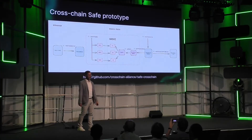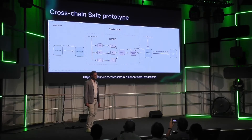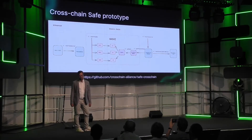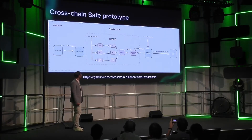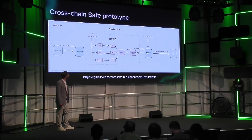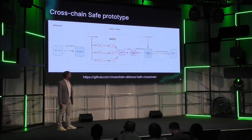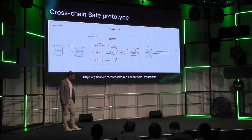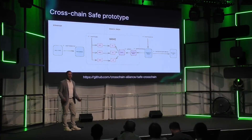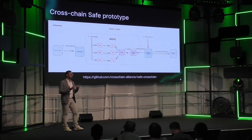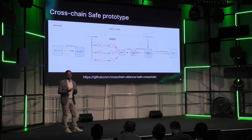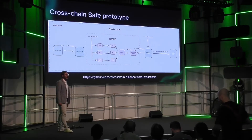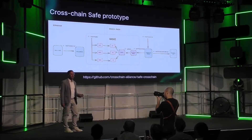This is a prototype we've been working on called Cross-Chain Safe, which uses ASHI — you can see ASHI in the middle. ASHI is basically a bridge abstraction layer designed to aggregate multiple bridges at once, so that you don't rely on the trust assumptions of just one. It's designed to maximize security and avoid lock-ins.